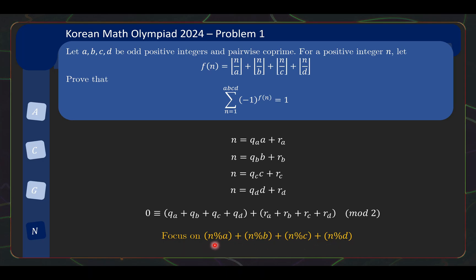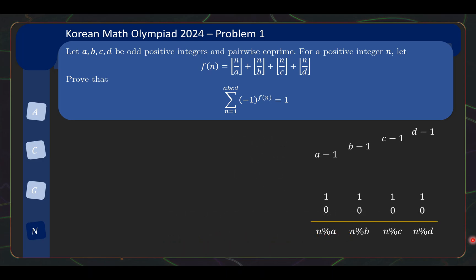So this tells us that instead of focusing on the floor function, we can focus on the remainders. So I'll use the notation n%a to mean the remainder when n is divided by a. This is a standard notation from programming. So how is using the remainder more useful than using the floor function? Well, let's think about the remainder for a bit. So the remainder when you divide by a can be from 0 to a minus 1, when you divide by b can be 0 to b minus 1, and so on.